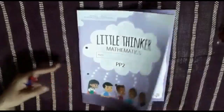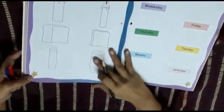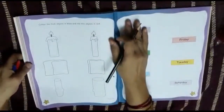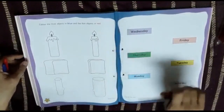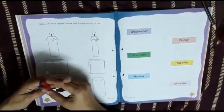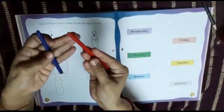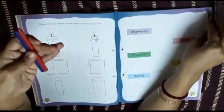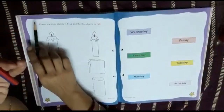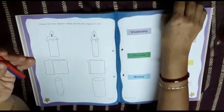Let's open Little Thinker Mathematics, page number 46. You can see page number 46 right here. What you have to do is color the thick objects in blue and thin objects in red. I have two colors — blue and red. First of all, as soon as you open your book to page number 46, you are going to write today's date on the topmost left-hand side corner.